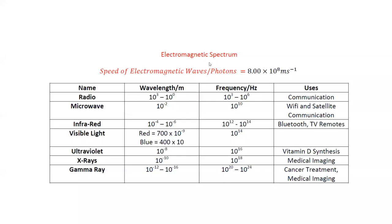The electromagnetic spectrum consists of all electromagnetic waves — waves which can transfer energy, travel at the same speed in a vacuum, and do not require a medium. They are all transverse waves.